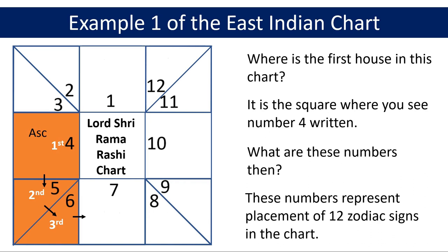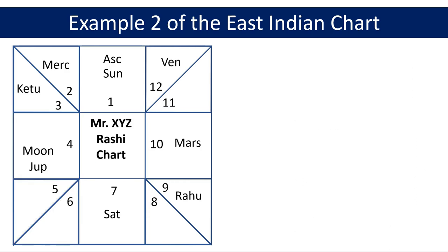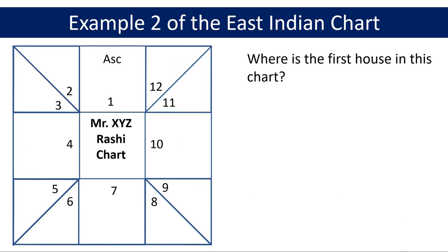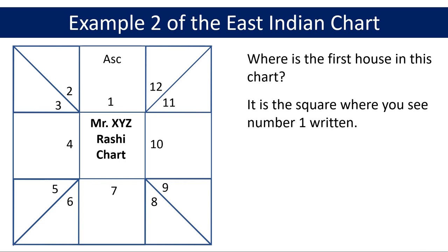Now look at this chart of some person. Let's get rid of planet names from the chart so that we only have ascendant and numbers left. Where is the first house in this chart — is it where you see number four written like the previous chart, or is it where you see number one written? Since the position of the ascendant or lagna tells you the location of the first house in the East Indian chart, the first house in this chart is the square where you see the ascendant denoted by ASC and where the number one is written. I have highlighted it on the screen.